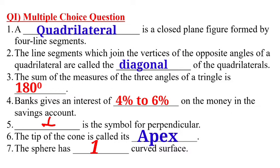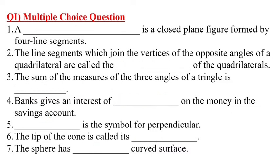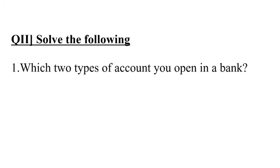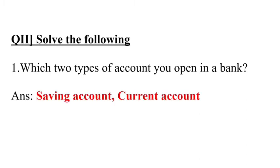The seventh one is given: the sphere has dash curved surface. The sphere has one curved surface. Very good. Now children, we will start question number two. Solve the following. The first one is given: which two types of account you open in a bank? So you can open saving account and current account in a bank.